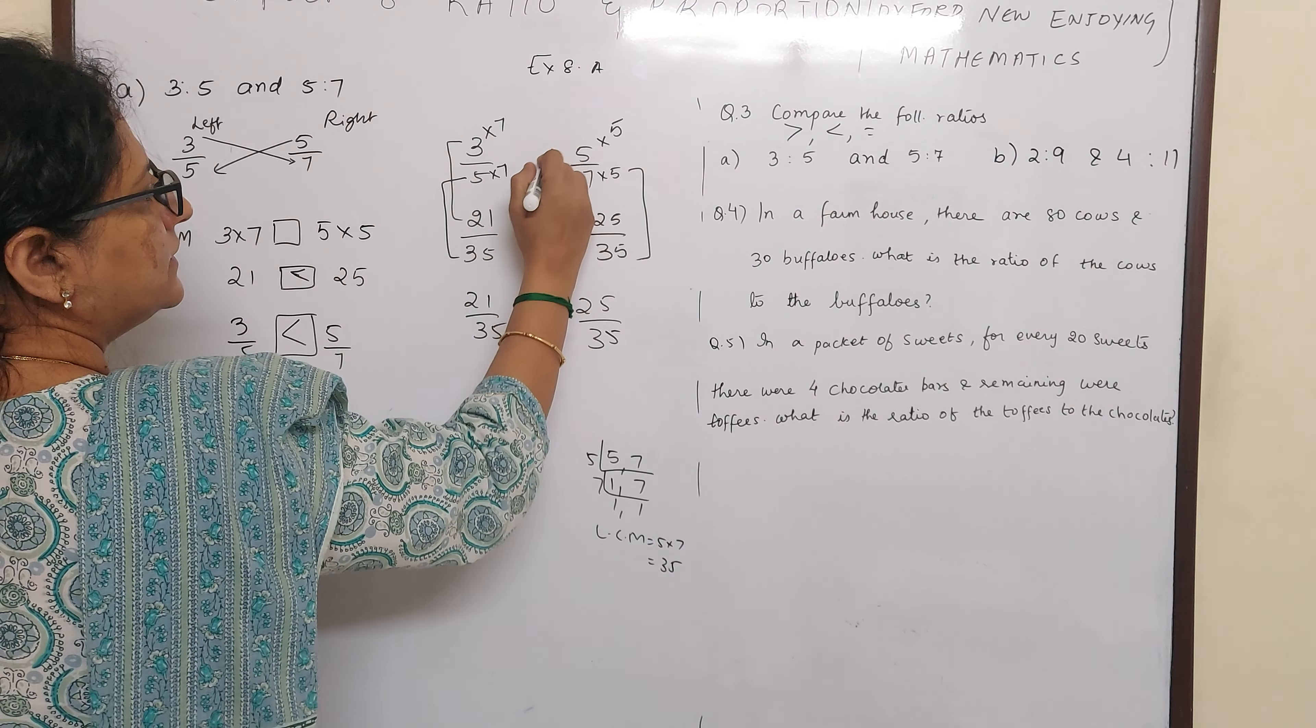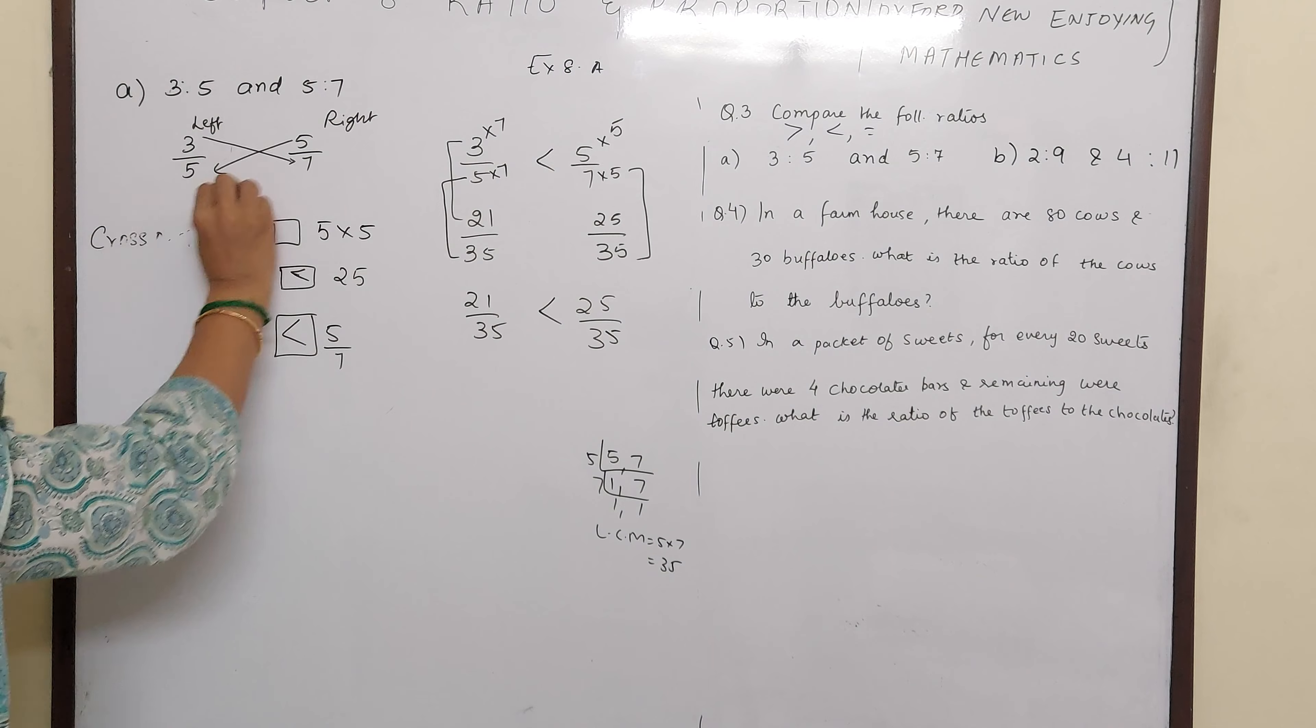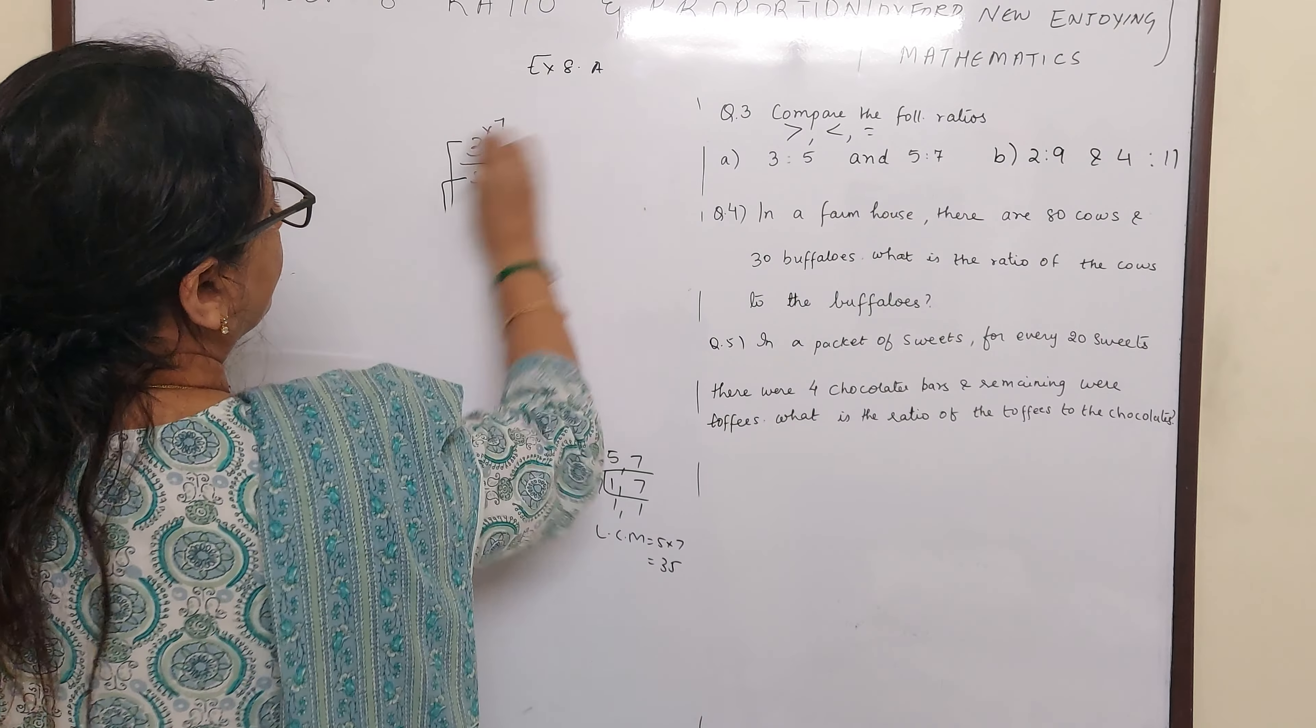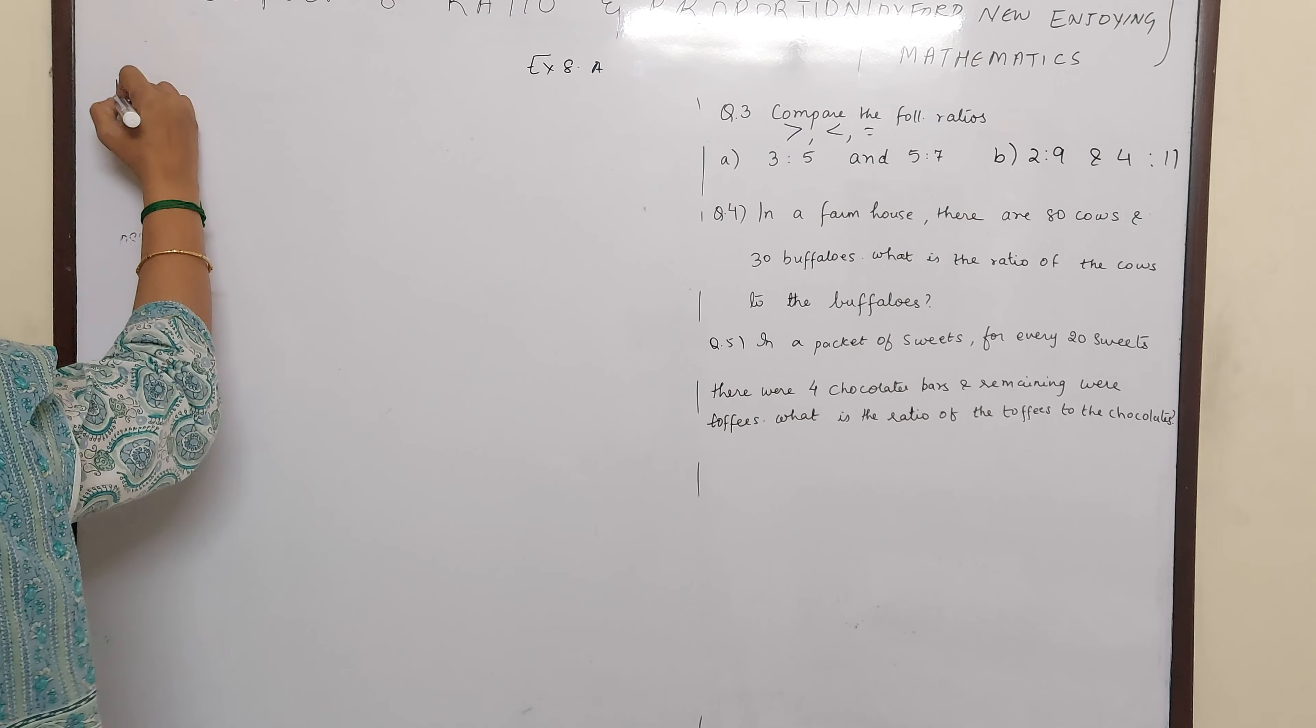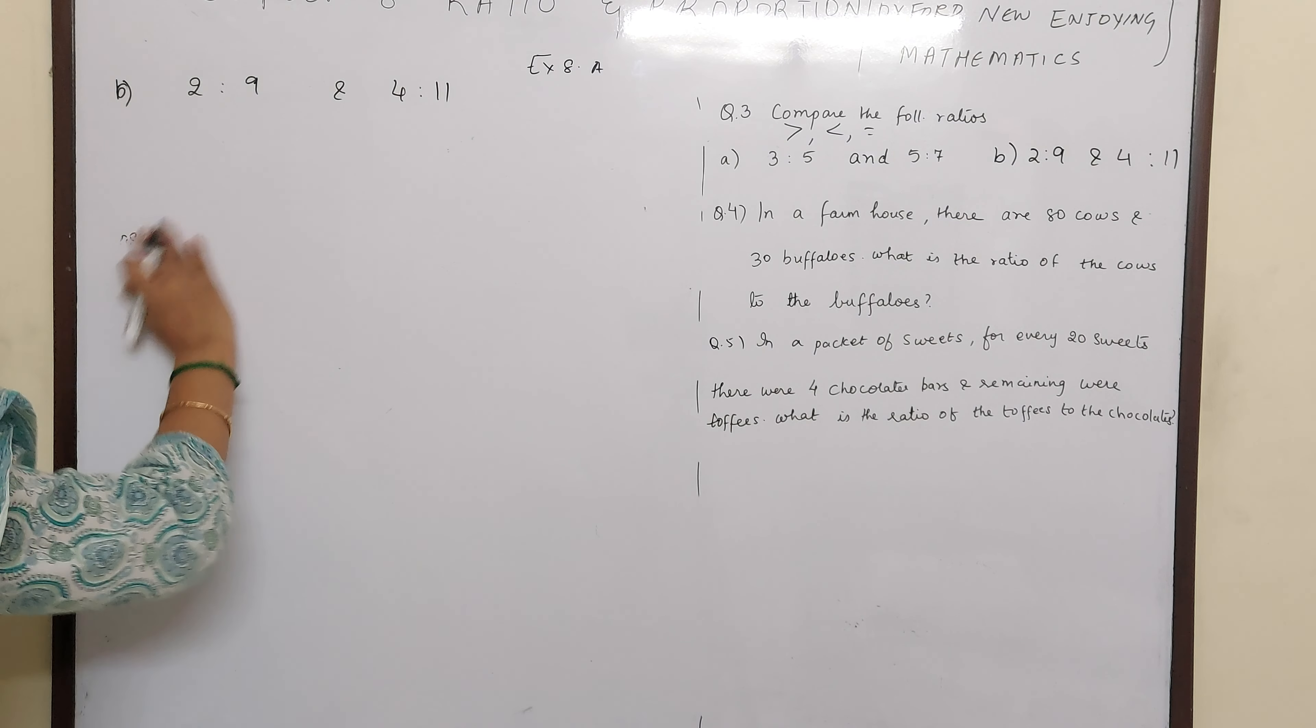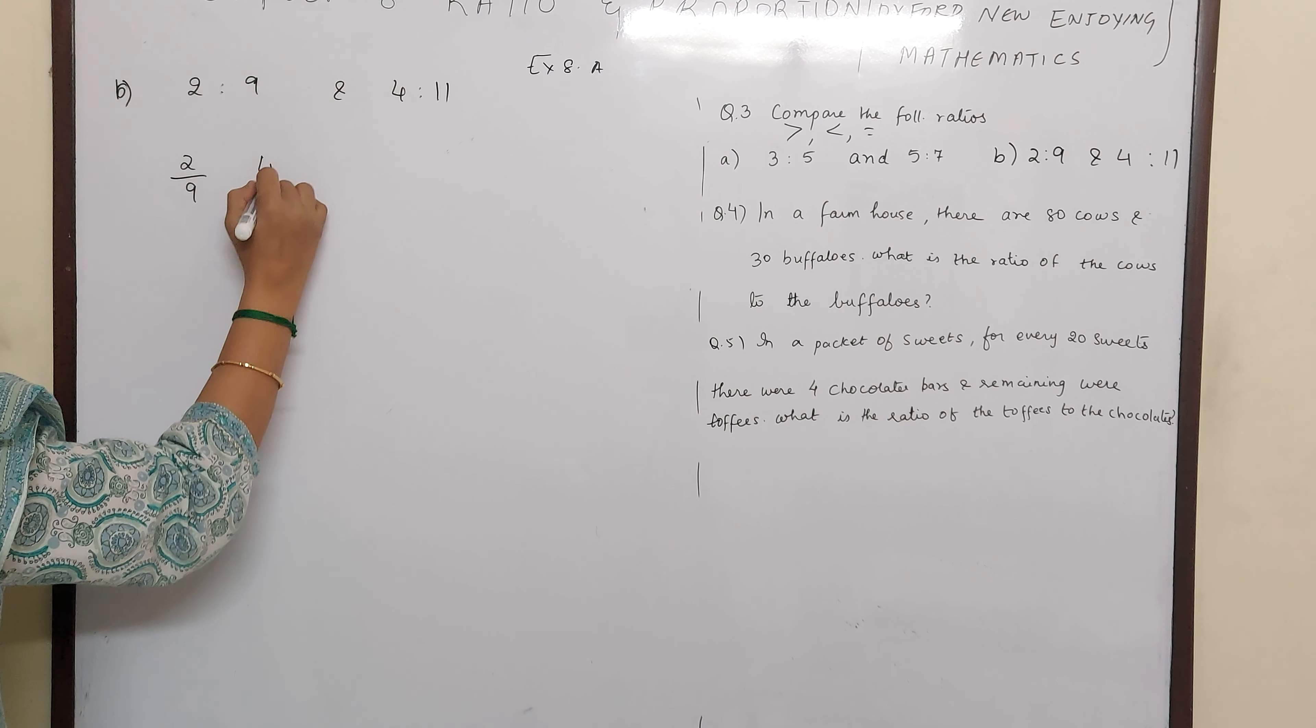If you see the denominators are equal. So 25 is greater. So you can do it like this. And here also you can do it in the question. So you understood? Let us do one more sum. And you can solve it along with me. 2 is to 9 and 4 is to 11.